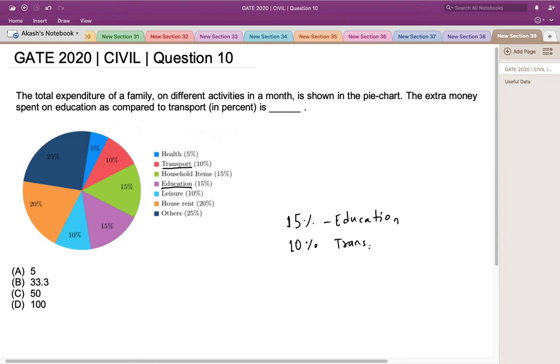Now to determine the extra money that is spent on education, all we need to do is take the difference of these two quantities to the original quantity, that is transport, times 100. This would give me 50%. So 50% is the extra money that is spent on education as compared to transport.